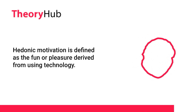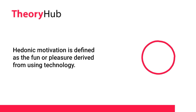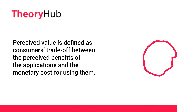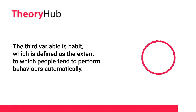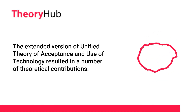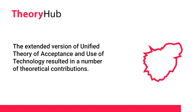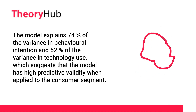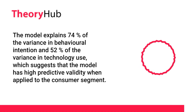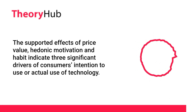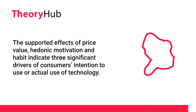Hedonic motivation is defined as the fun or pleasure derived from using technology. Perceived value is defined as consumers' trade-off between the perceived benefits of the applications and the monetary cost of using them. The third variable is habit, which is defined as the extent to which people tend to perform behaviors automatically. The extended version of UTAUT resulted in a number of theoretical contributions. The model explains 74% of the variance in behavioral intention and 52% of the variance in technology use, indicating high predictive validity when applied to the consumer segment. The supported effects of price value, hedonic motivation and habit indicate three significant drivers of consumers' intention to use or actual use of technology.